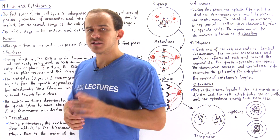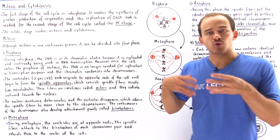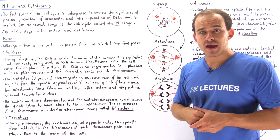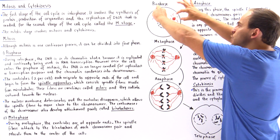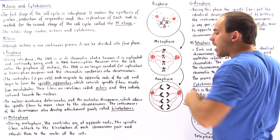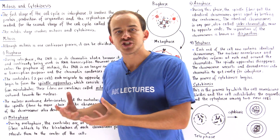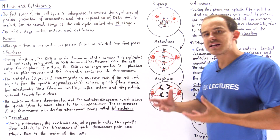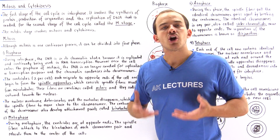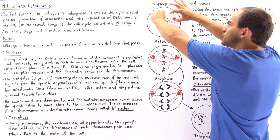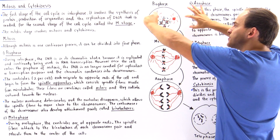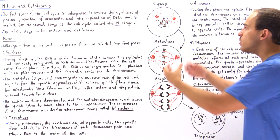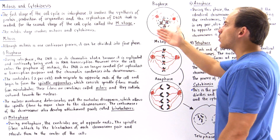Each animal cell contains a single centrosome, which is the region of the cell that contains two identical centrioles. In prophase, these two centrioles begin to move to opposite ends of the cell, and as they do, they begin to synthesize the spindle apparatus, also known as the mitotic spindle apparatus. The mitotic spindle consists of special spindle fibers made from microtubules, also known as asters, which grow and radiate outward toward the center of the cell toward the nucleus.